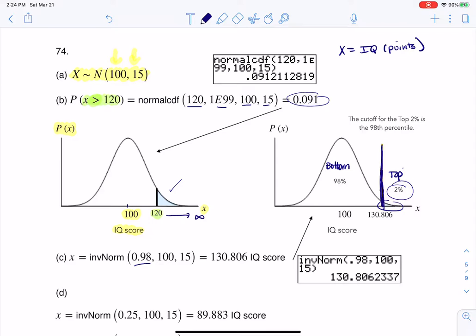So when I plug in 0.98, the mean and standard deviation, I find out that if you score about 130.8, then you're going to qualify for Mensa. So that's where I'm getting that number there.